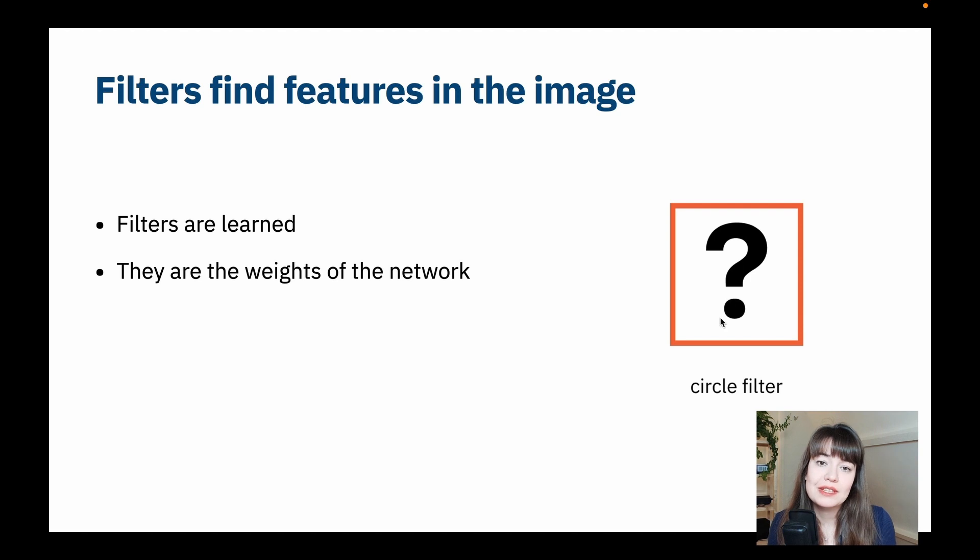Those are basically, a filter is basically the weights of the network, the parameters of the network. They need to be trained, they need to be learned during the training process of your convolutional neural network. So just like we initialize the weights and biases of a feed-forward deep neural network, we again initialize the biases and the weights, weights being the filters of a convolutional neural network and let the training process update them to give the best results.